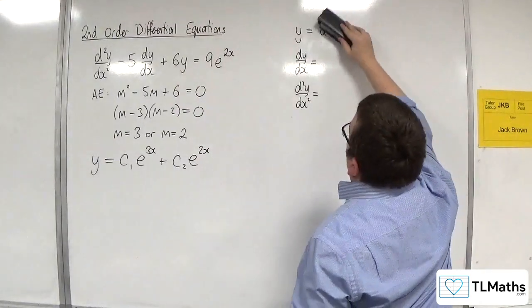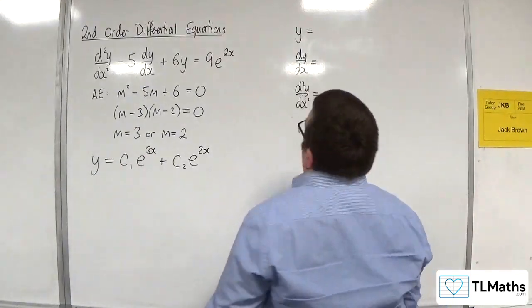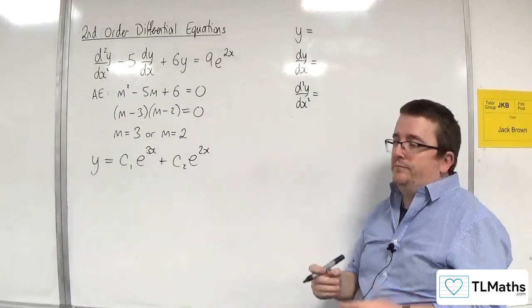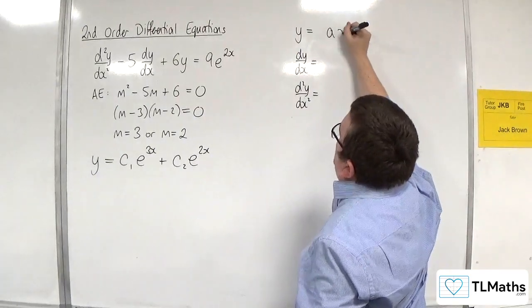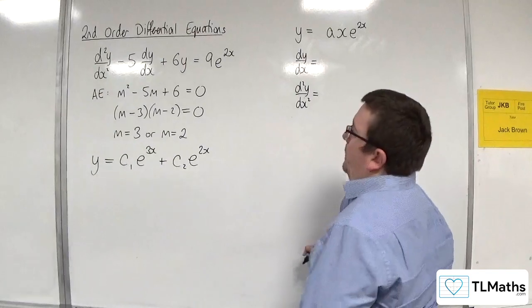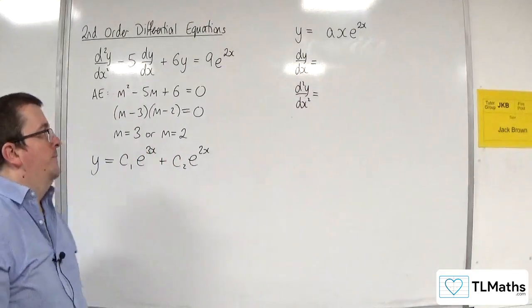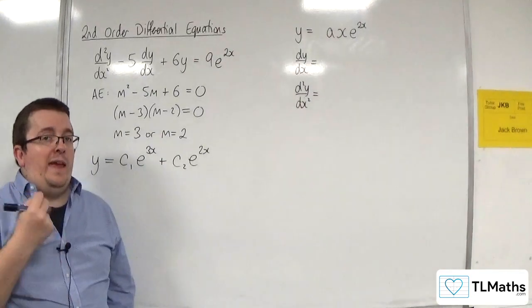Well, in order to make it work, we actually need to multiply our test function by x. So I actually need to consider axe to the 2x. Now, this isn't immediately obvious as to why this would work. So let's see it in action.